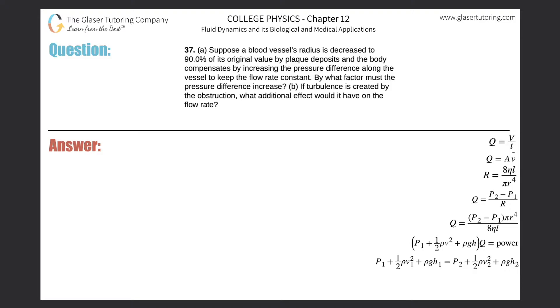Number 37, letter A. Suppose a blood vessel's radius is decreased to 90 percent of its original value by plaque deposits, and the body compensates by increasing the pressure difference along the vessel to keep the flow rate constant. By what factor must the pressure difference increase?